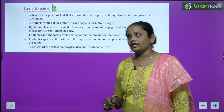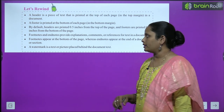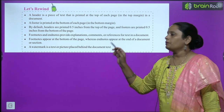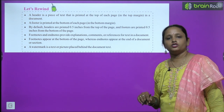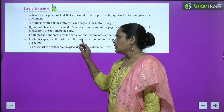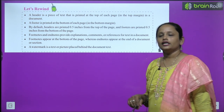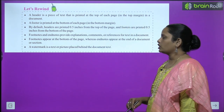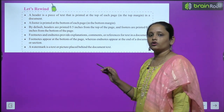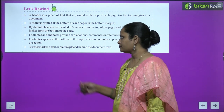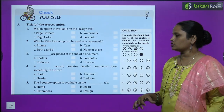Now let's revise what we have learned. A header is a piece of text printed at the top of each page in a document; a footer is printed at the bottom of each page. By default, headers are printed 0.5 inches from the top and footers 0.5 inches from the bottom of the page. Footnotes and endnotes provide explanation, comments, or references for text in a document. Footnotes appear at the bottom of the page, whereas endnotes appear at the end of the document or section. A watermark is text or a picture placed behind the document text.